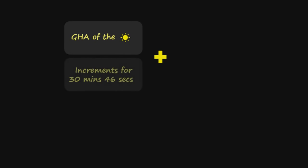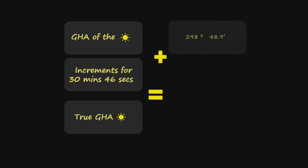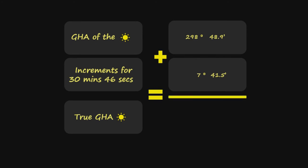Step 5: Solve for the true GHA. GHA of the sun plus the increment of 30 minutes and 46 seconds equals the true GHA of the sun. The GHA value is 298 degrees, 48.9 minutes, and the increment value is 7 degrees, 41.5 minutes. Adding these together, 298°48.9' plus 7°41.5', the answer is 306 degrees and 30.4 minutes. Therefore, our true GHA is 306 degrees and 30.4 minutes.